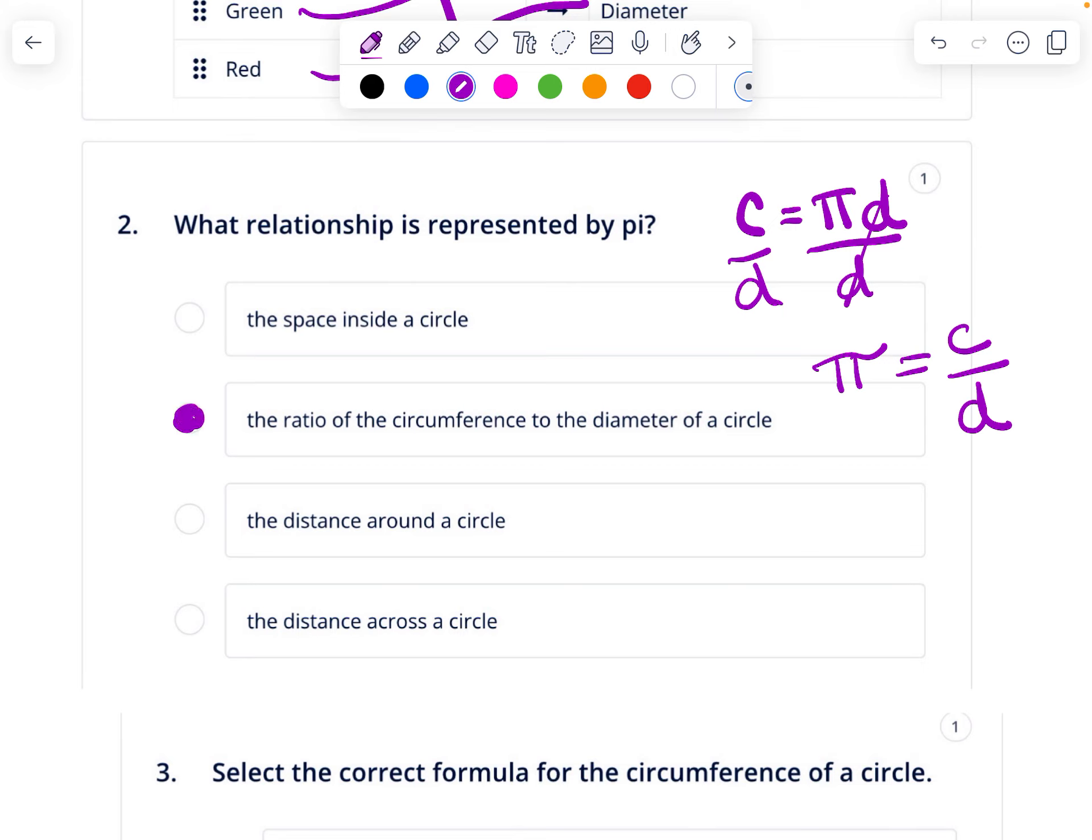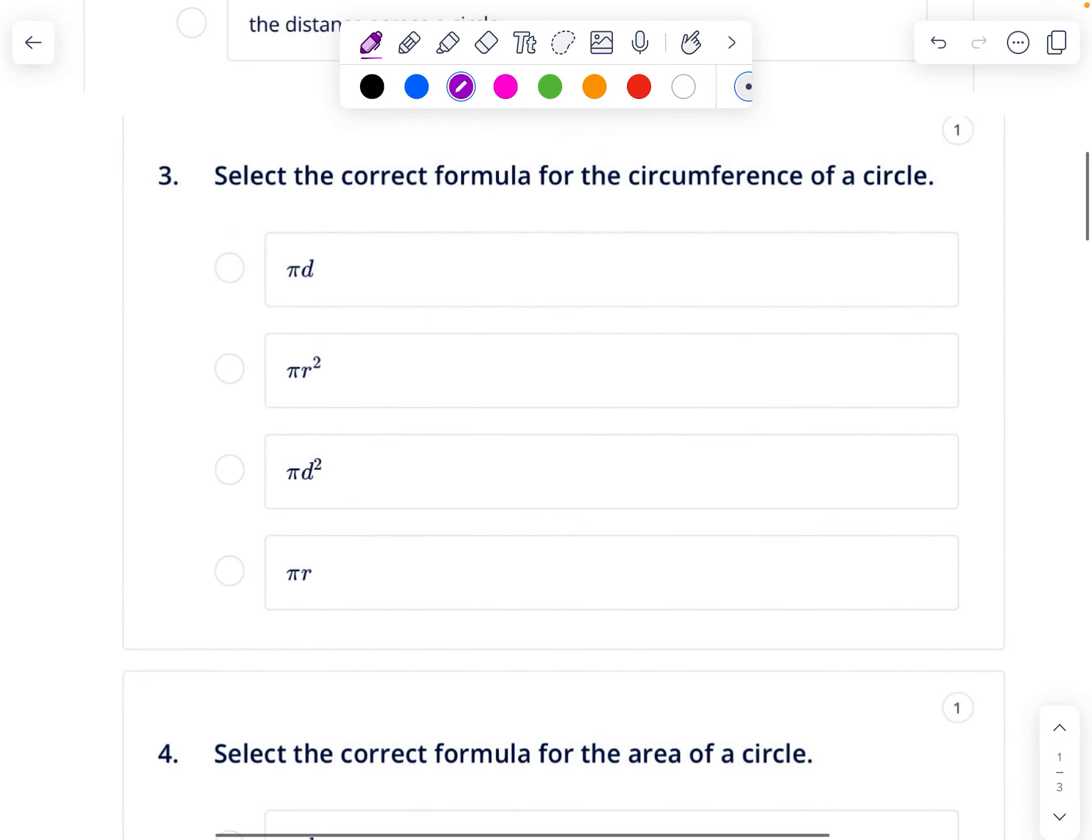And then this is just memorizing formulas. The circumference, which I just showed you, is pi times diameter. The area is pi r squared.